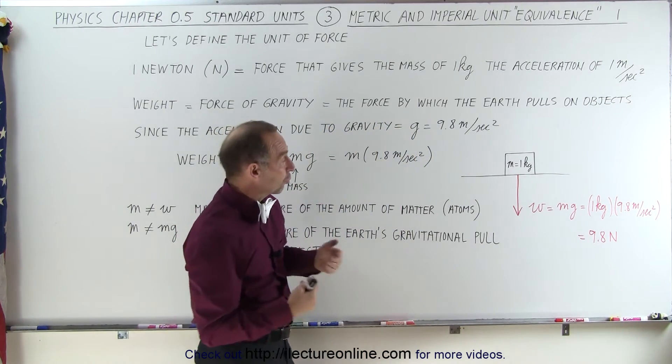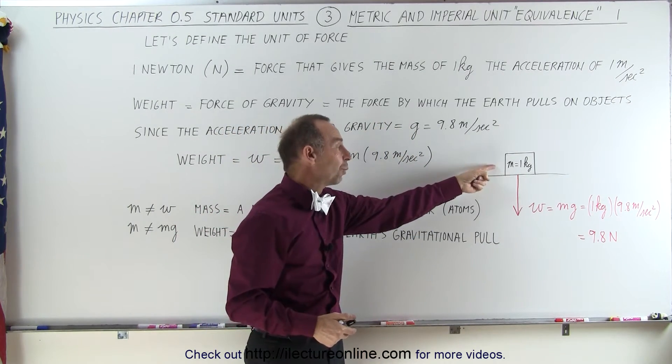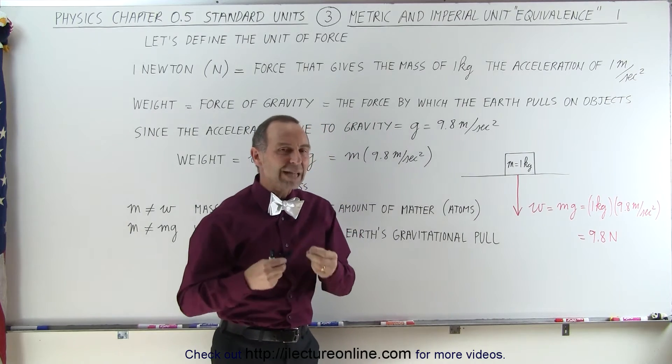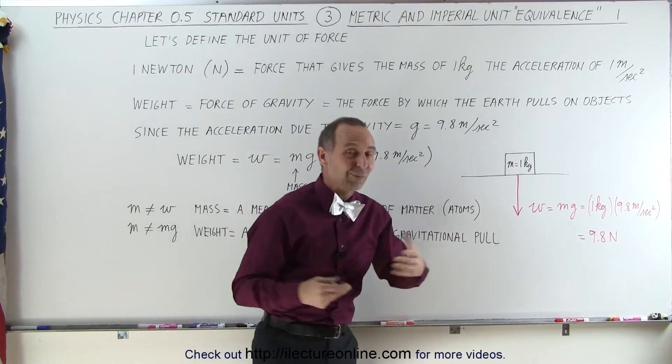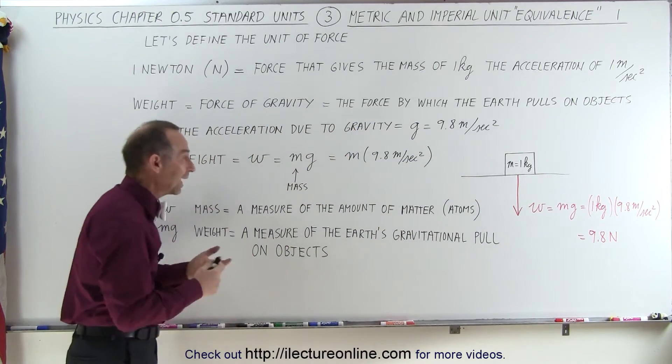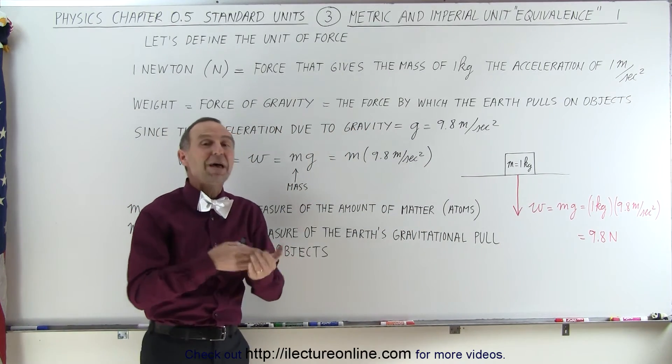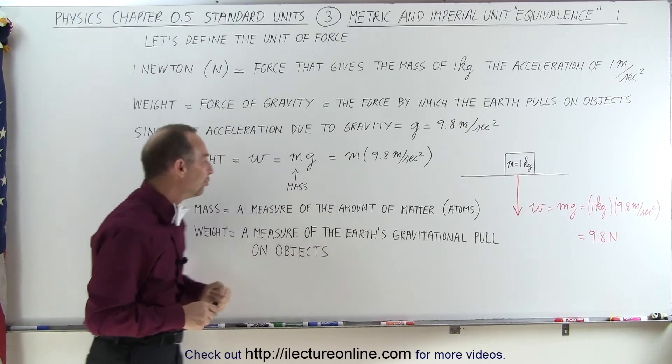Which means an object on the surface of the Earth that has a mass of 1 kg has a weight of 9.8 N. We can go right to the unit N. So again, a mass of 1 kg has a weight of 9.8 N.